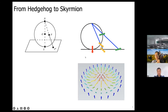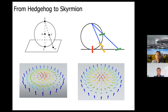The next speaker will talk extensively about the Néel-type skyrmion realized in magnetic multilayers. I will mostly talk about the so-called Bloch-type skyrmion. They are related by a rotation of all spins about the z-axis by an angle of 90 degrees.